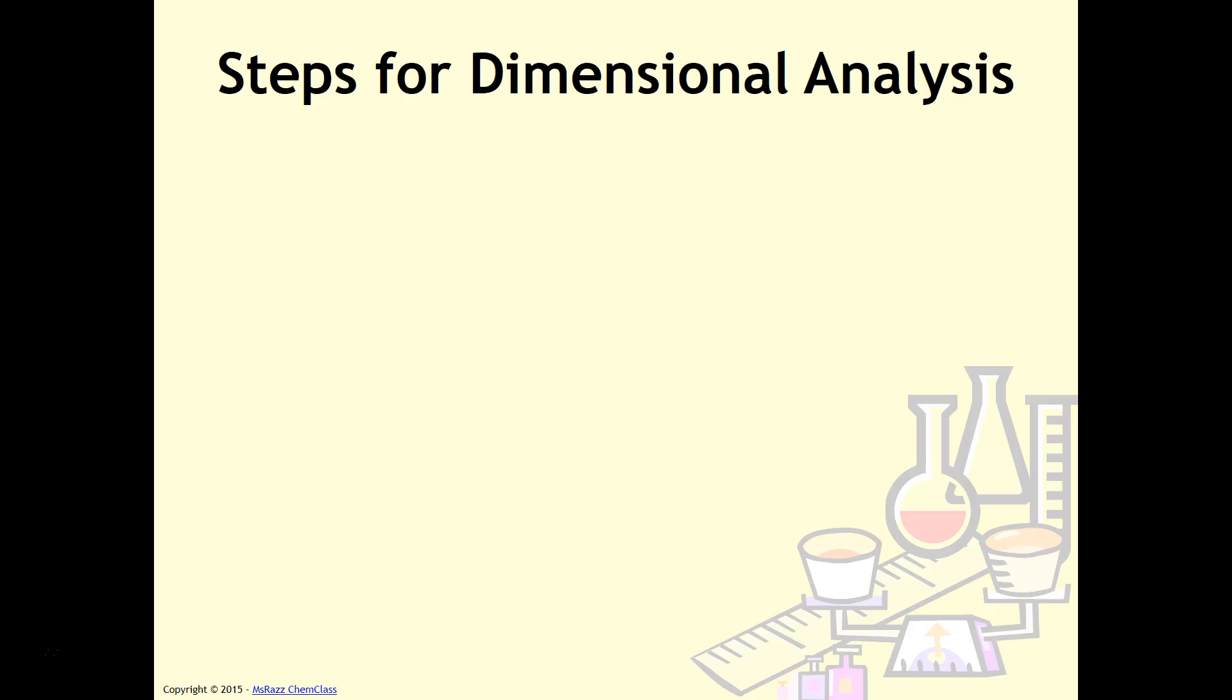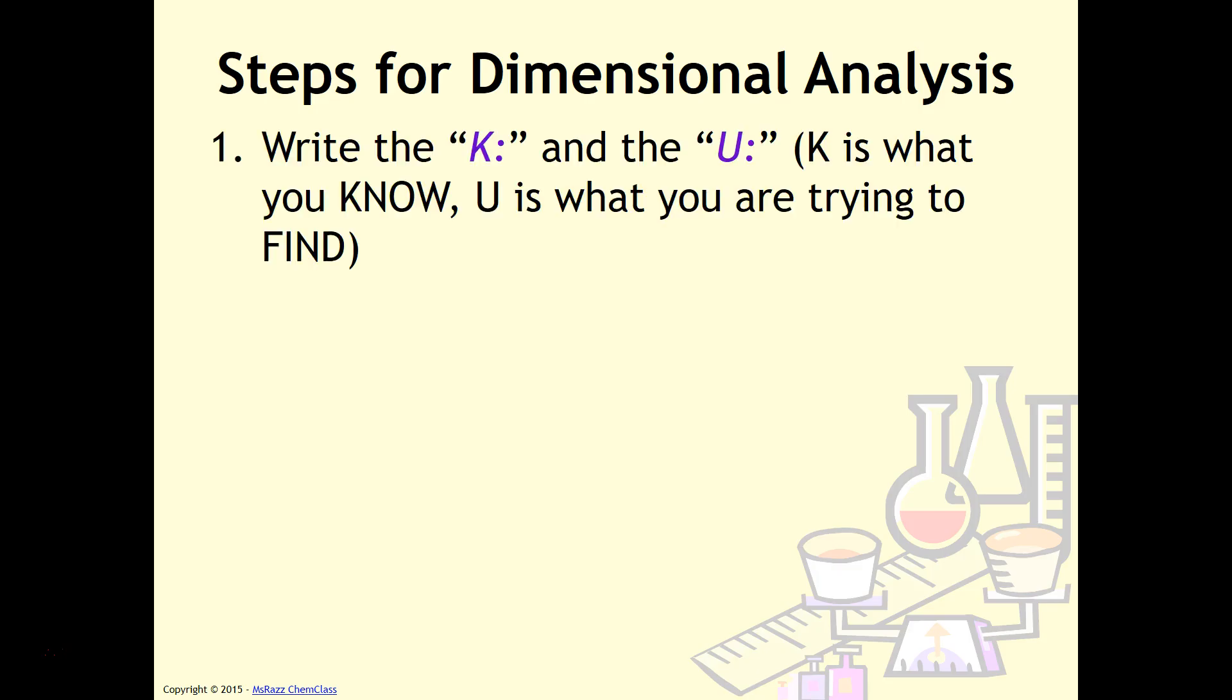Dimensional analysis is what you are going to be using throughout the school year. This skill is imperative to your success in chemistry. It is incredibly important that you take notes on this so you understand what is expected of you throughout the school year. The first step for using dimensional analysis is to write the K and the U. The K is what you know and the U is what you're trying to find. For my students, typically I teach the K and the U at first, but eventually they do so well with dimensional analysis, they won't need it anymore.